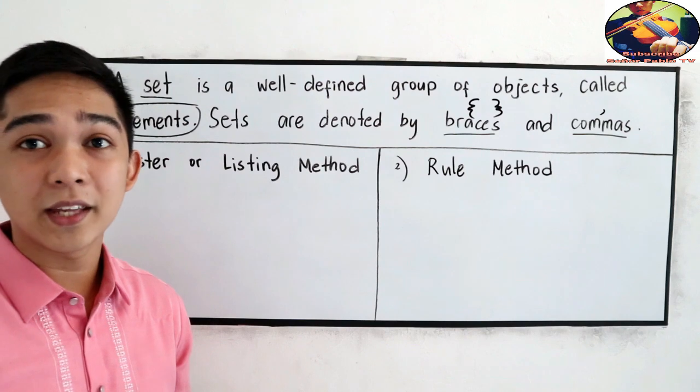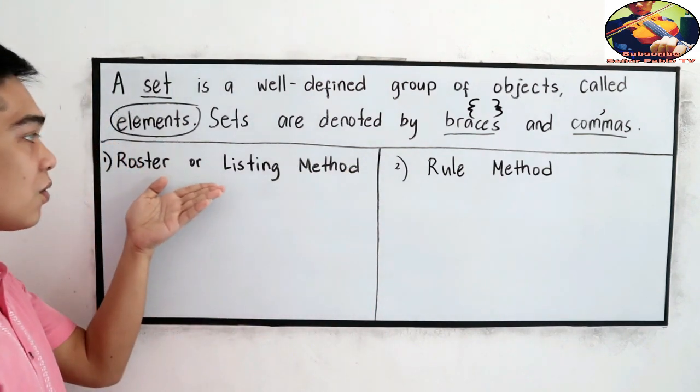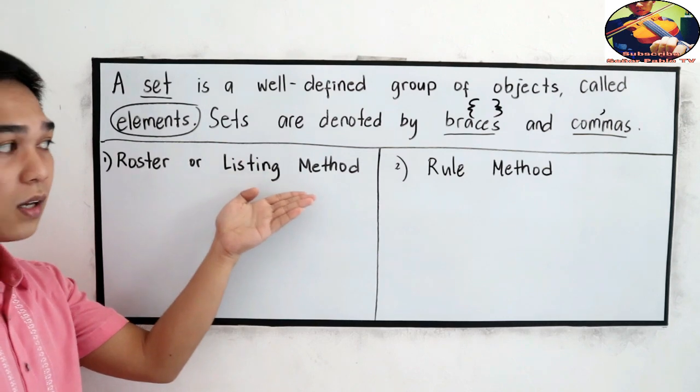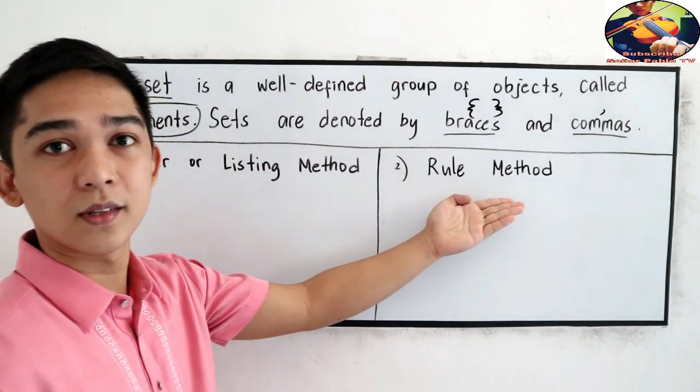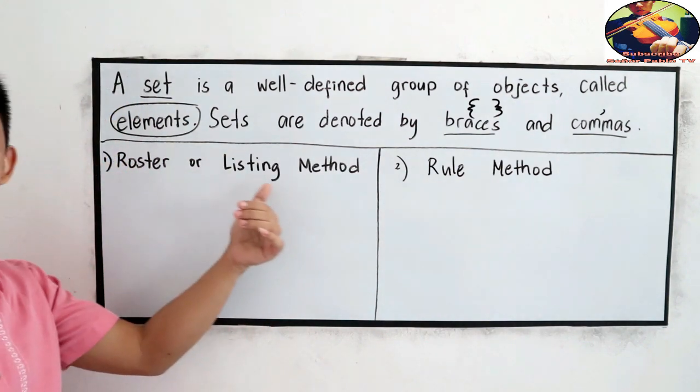And we can define set in two ways. We have the roster or listing method and the rule method.